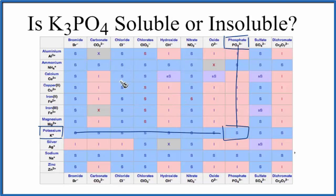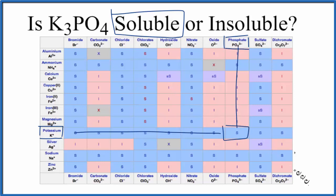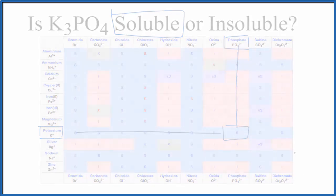So in answer to our question, K3PO4 is soluble in water. This is Dr. B, and thanks for watching.